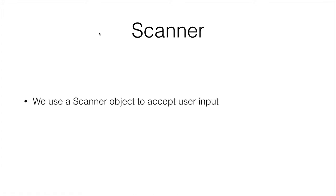We have to use a class called Scanner. Remember how we said that objects are things that represent real things in the real world. A Scanner is going to represent just that — it's going to be able to scan text and numbers and things like that from the console. So we use the Scanner object to accept user input.